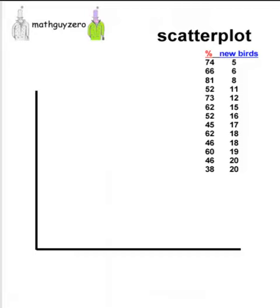Next you have to decide what's going to be your explanatory variable. If you're not sure, just use the first column. We're going to label the x-axis as the percent of returning birds.